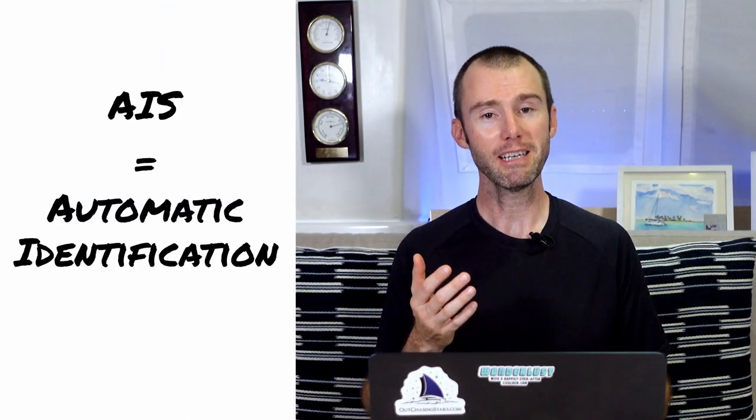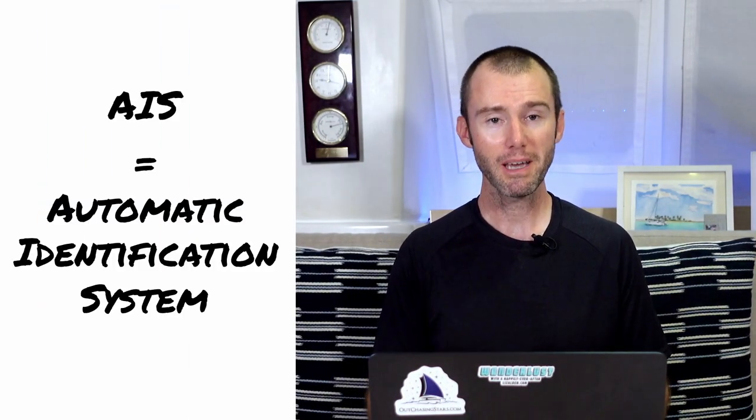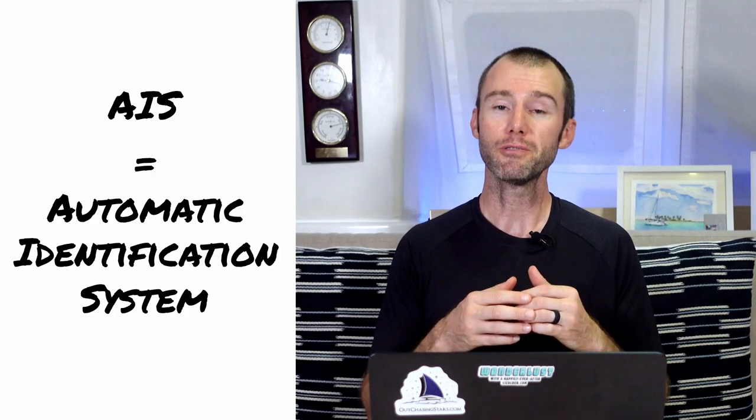To start off let's define some terms. Hopefully everyone watching this video is familiar with AIS which stands for Automatic Identification System and helps identify other vessels in your area and avoid collisions. It was number two on my list of best upgrades for a blue water boat and I think it is vital for anyone setting out to sea.